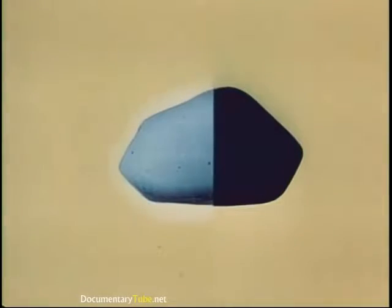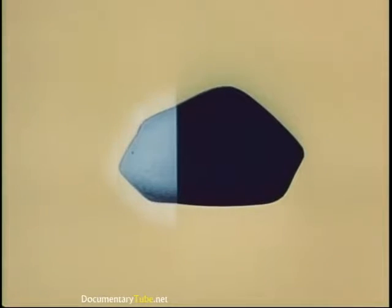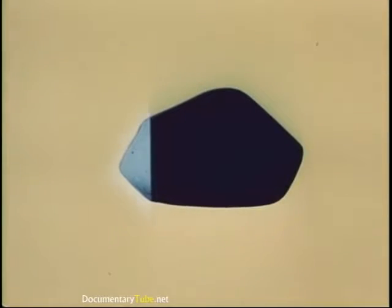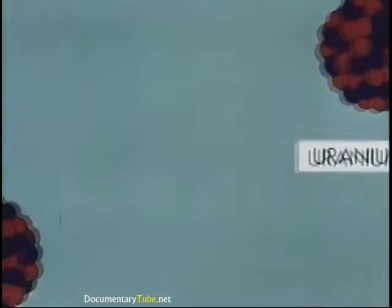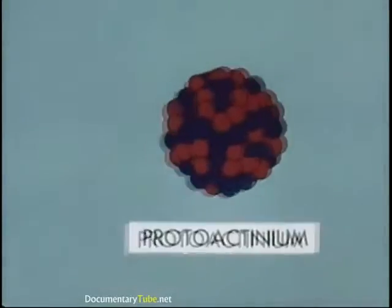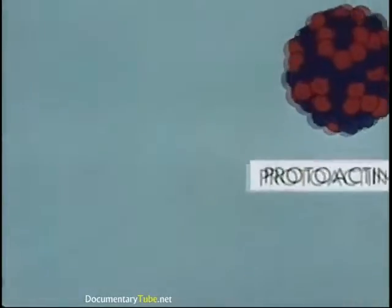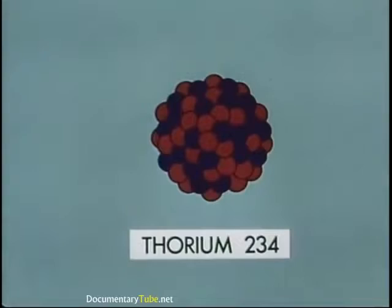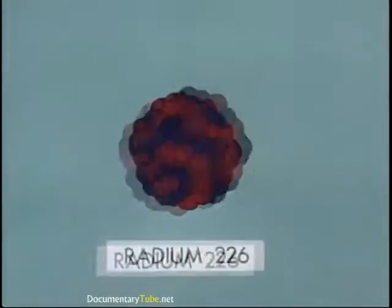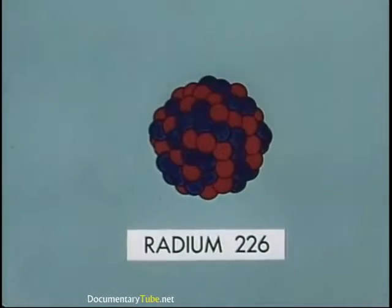The fact that some radioactive matter always remains is not so important as the time required for the half to decay. Half-life varies from isotope to isotope. It takes four billion five hundred million years for half a hunk of uranium-238 to become thorium-234. The half-life of radium-226 is sixteen hundred years.